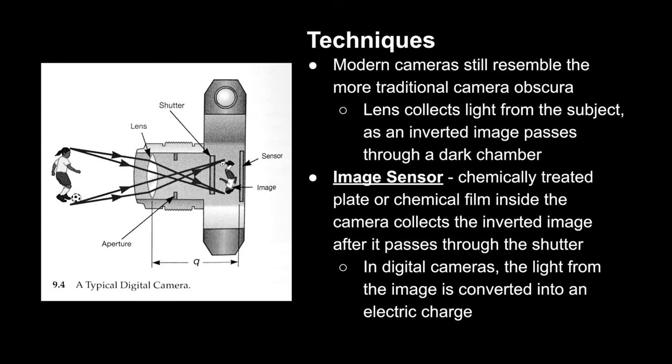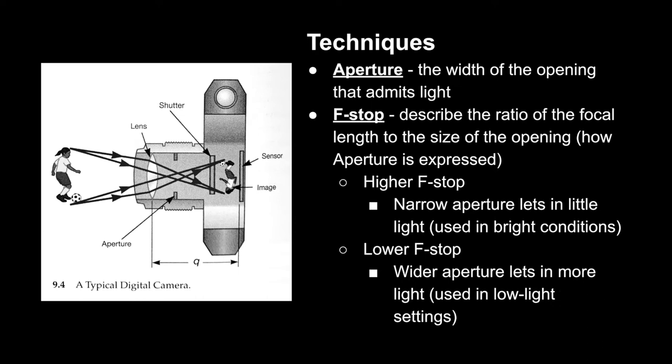In digital cameras, the light from the image is then converted into an electric charge. While the lens functions very similarly to the pinhole, the aperture is what denotes the size of that opening, and it's measured in terms of the f-stop.